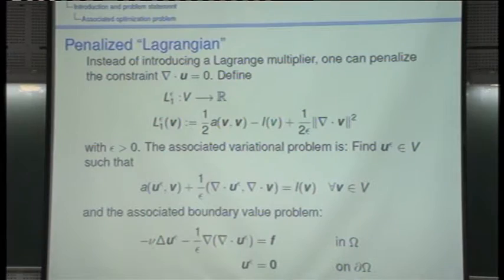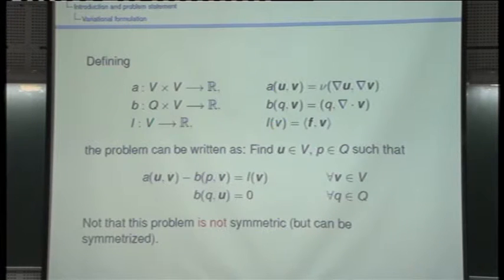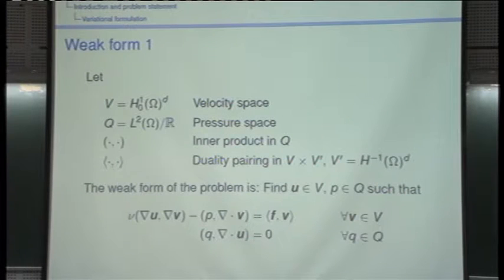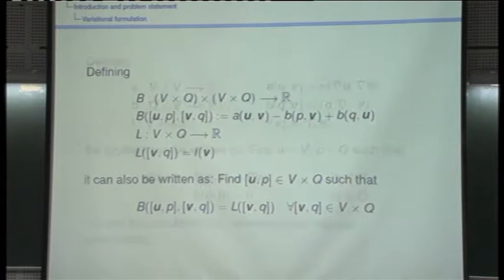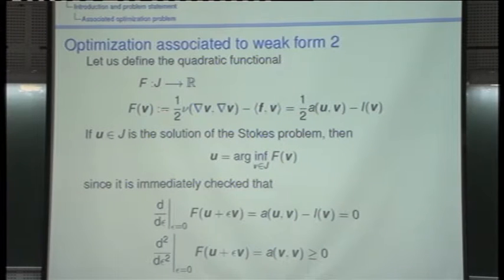Good morning. We will continue with the Stokes problem today. Let me summarize what we said yesterday. We are solving the Stokes problem. We know the functional setting — that is the weak form — and it can be written as a single equation. We also saw that it is possible to pose the problem in the space of divergence-free functions, where the problem corresponds to the minimization of a functional J in that space.